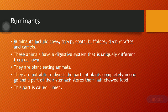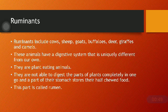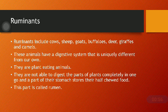Ruminants are not able to digest the parts of plants completely in one go, and a part of their stomach stores their half-chewed food. This part is called the rumen. That is why it is very common to observe animals like buffaloes and cows — they keep chewing throughout the day. This is because of the special digestion present in them.